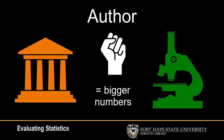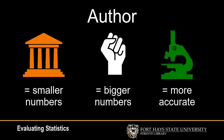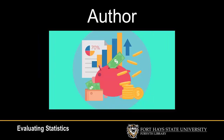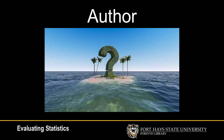Advocacy groups tend to report bigger numbers to suggest there is a significant problem. Government agency statistics tend to be more conservative. University researcher statistics tend to be less biased, but are usually only found in scholarly articles. Keep in mind that corporations also produce statistics, but those are generally created with the express purpose of increasing sales. If a statistic doesn't include where it came from, don't use it.